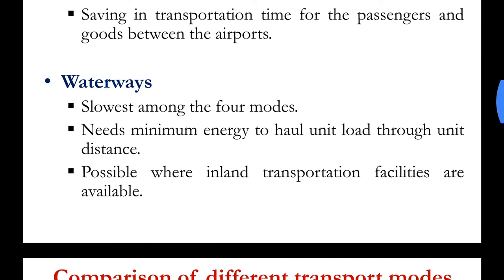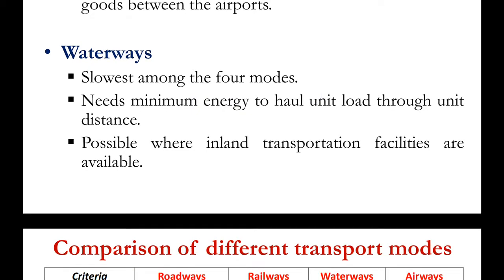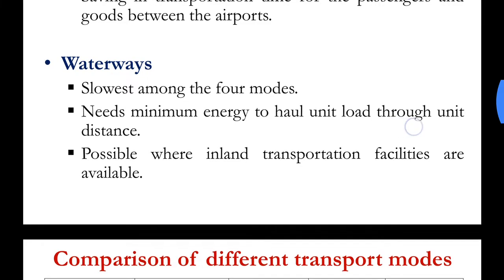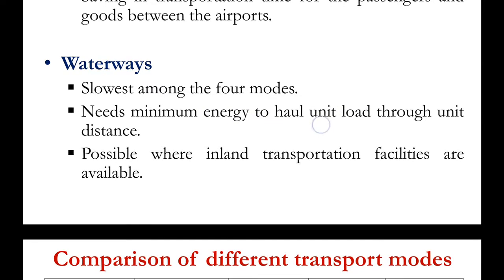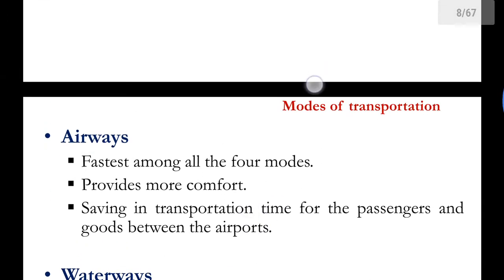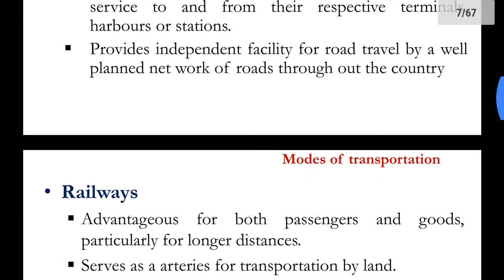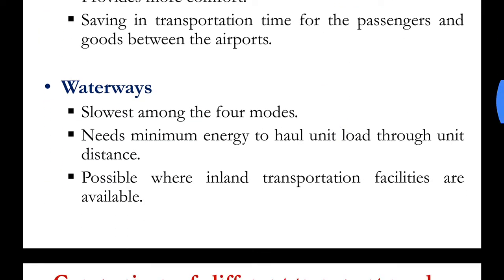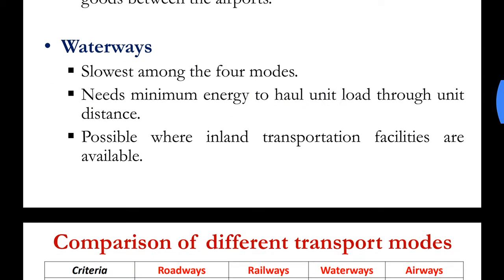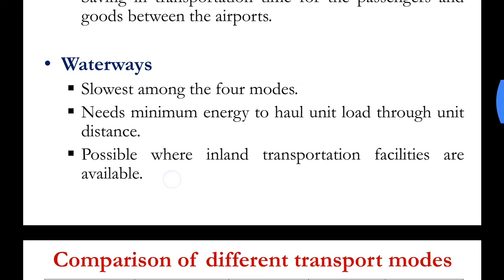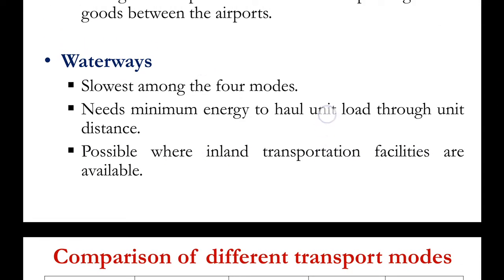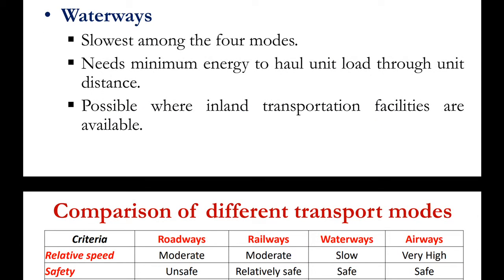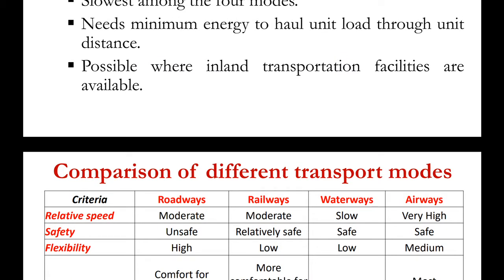The next mode is waterways. It is the slowest among the four modes. Among all modes, the slowest way to travel from point A to point B is waterways. However, it needs minimum energy to haul unit load through unit distance — the least fuel usage is in waterways. Waterways are only possible where there is water connectivity between two points, with a water stream of minimum required depth.